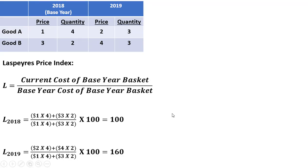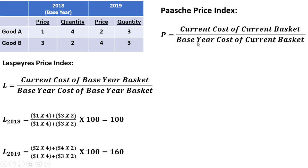Now let's do the Paasche index. The formula here can be thought of as the current cost of the current basket divided by the base year cost of the current basket. The basket will always be changing with the Paasche index.